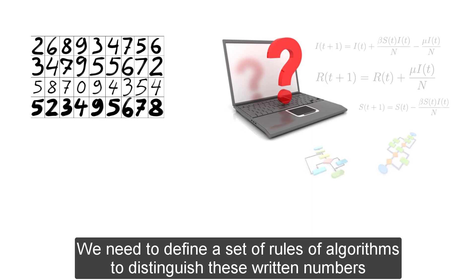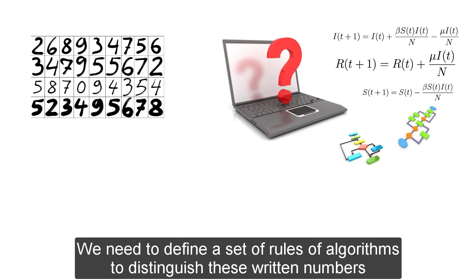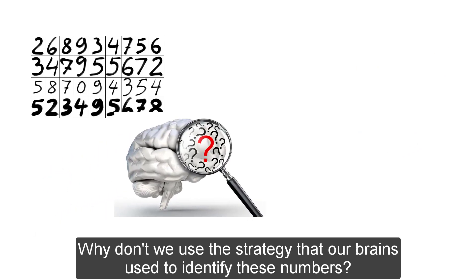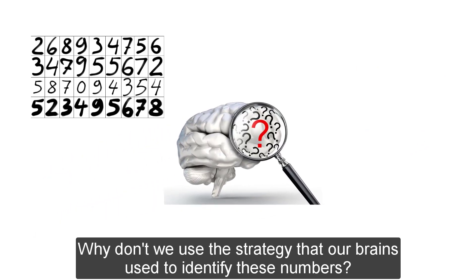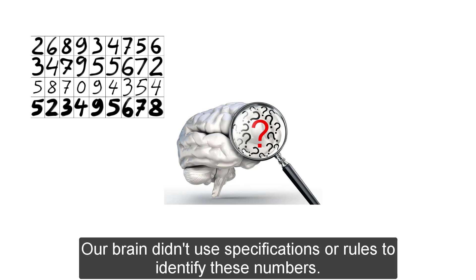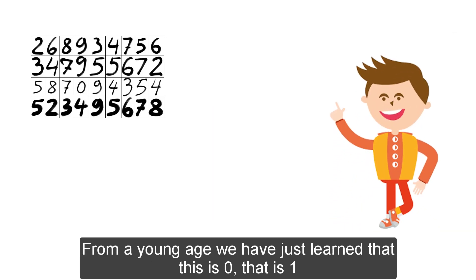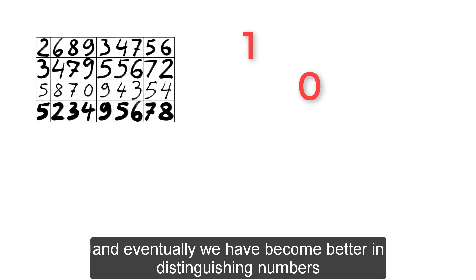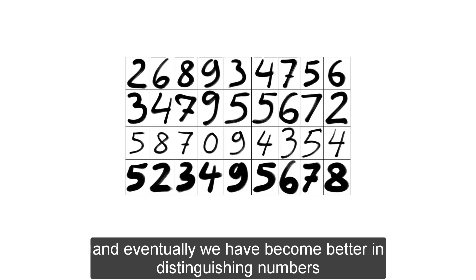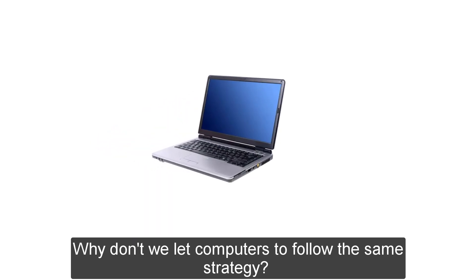We need to define a set of rules or algorithms to distinguish these written numbers. Why don't we use the strategy that our brain used to identify these numbers? Our brain didn't use the specifications or rules to identify these numbers. From a young age, we have just learned that this is zero, that is one. And eventually, we have become better in distinguishing numbers. Why don't we let computers follow the same strategy?